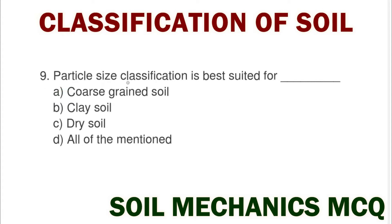The correct answer is to arrange the various soil types in groups. Next question: the particle size classification is best suited for option A coarse grain soil, option B clay soil, option C dry soil, option D all of mentioned. The correct answer is option B clay soil.